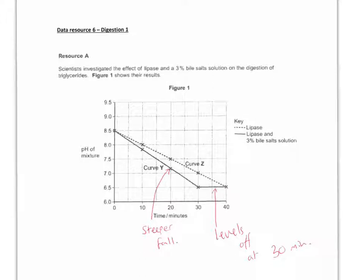Then we've got two curves. We've got a curve without bile salts and we've got a curve with bile salts. So question two is, describe the differences between the two. Well, two obvious differences is that curve Y drops at a faster rate, so it's a steeper fall in pH, and it also levels off at 30 minutes, whereas curve Z doesn't level off. They do also finish at the same final pH of 6.5 as well.